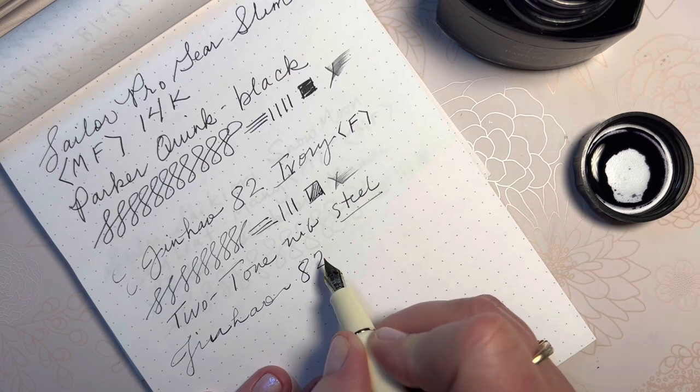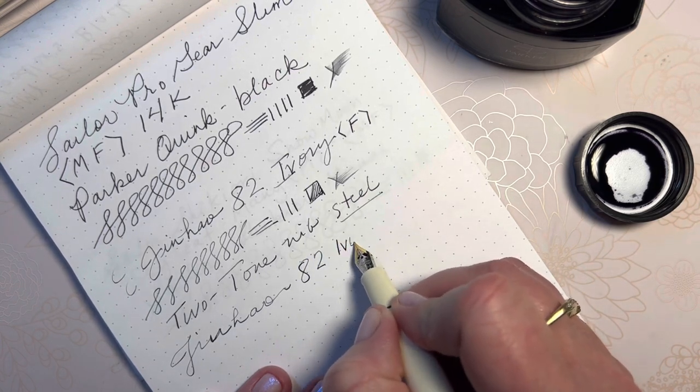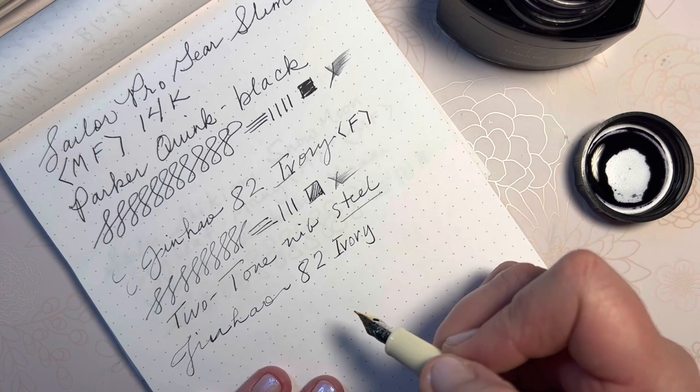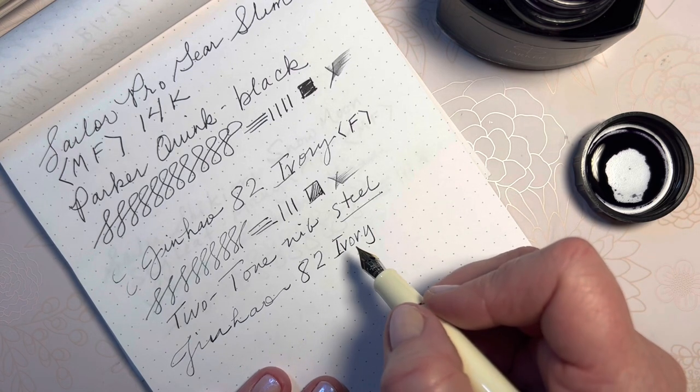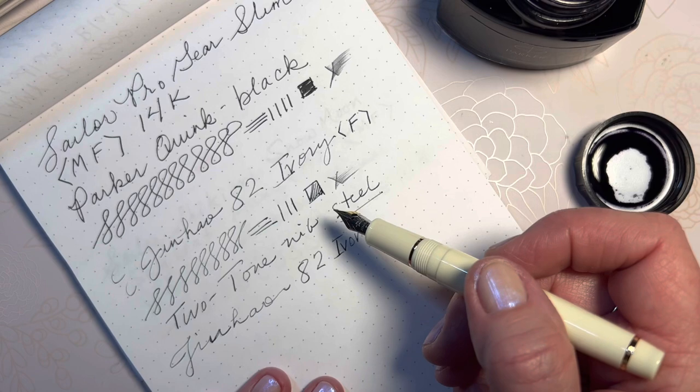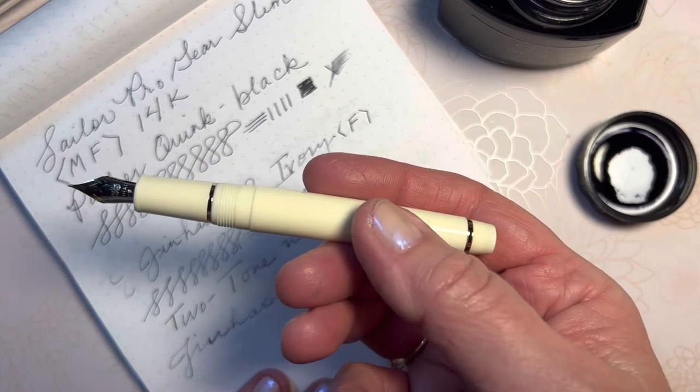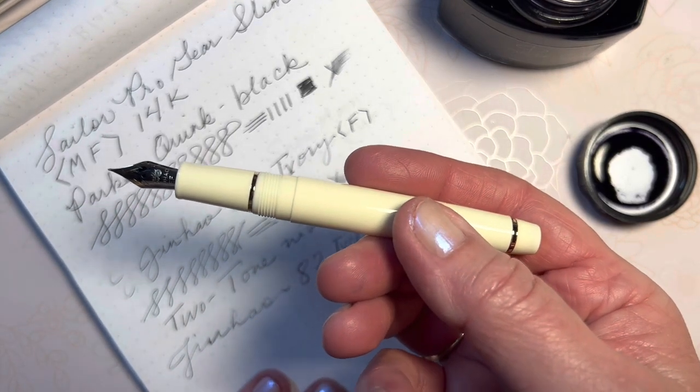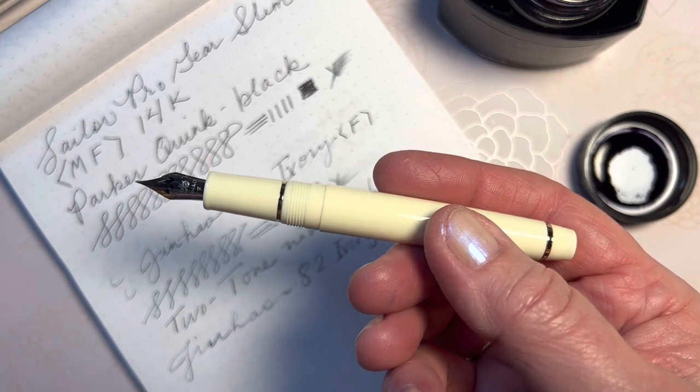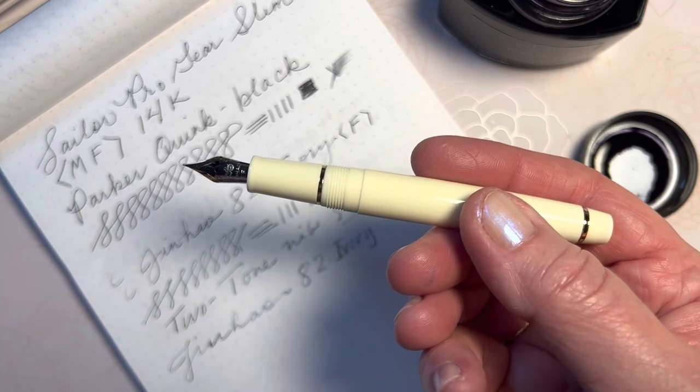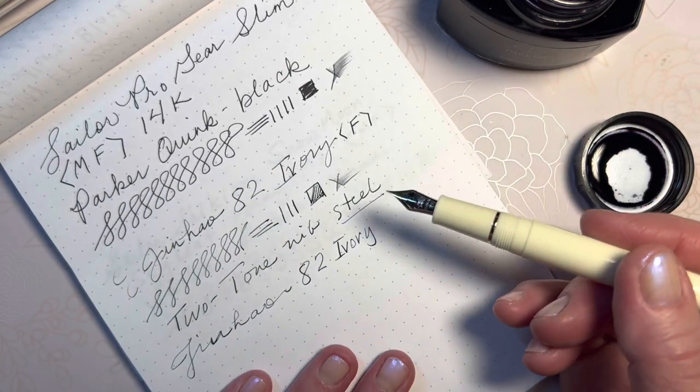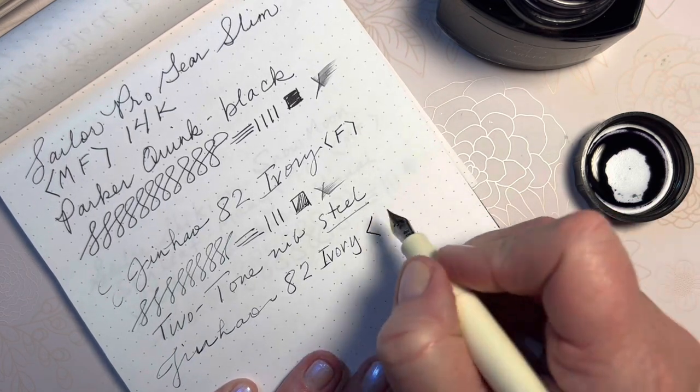So Jinhao 82, and this is the ivory color by the way. This pen had online like 30 different colors that you could get and they were all sets. But if you order the set, both pens were the same color. So if you order the blue you got two blues, if you order the red you got two reds. Very inexpensive.